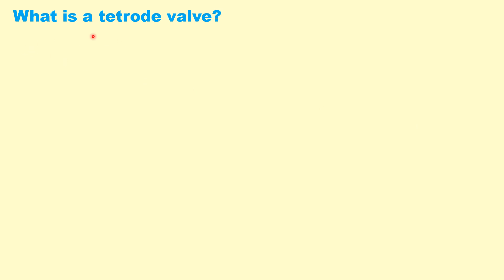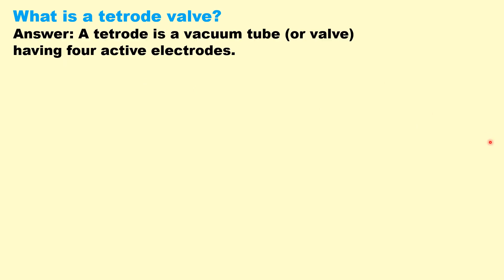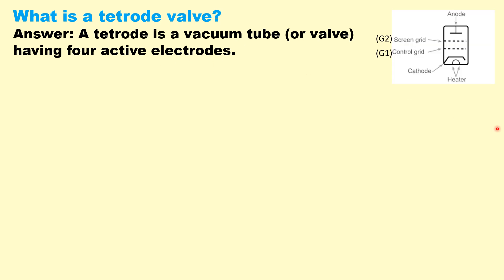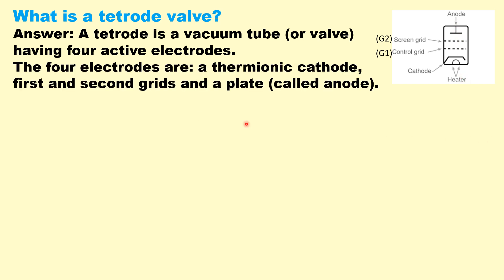What is a tetrode valve? A tetrode valve has four active electrodes: cathode, control grid G1, screen grid G2, and anode. There are four active electrodes in a tetrode valve.